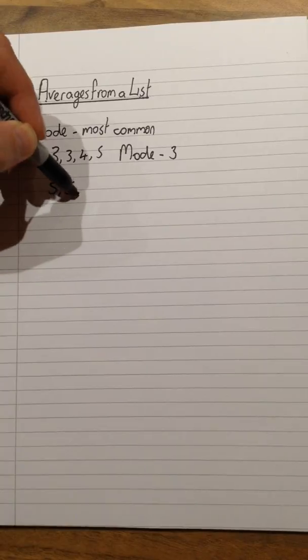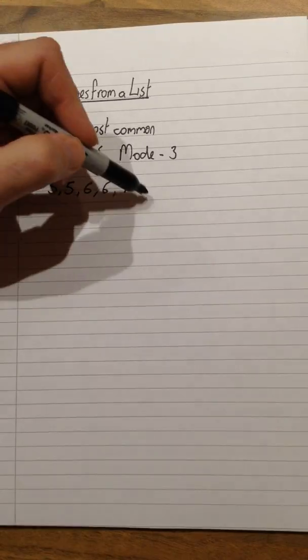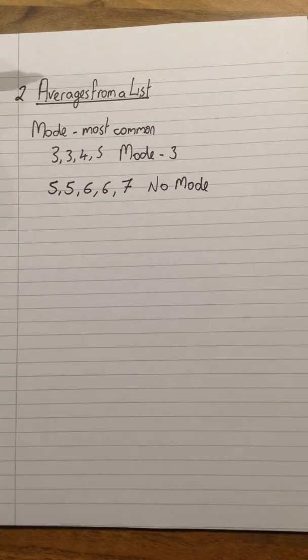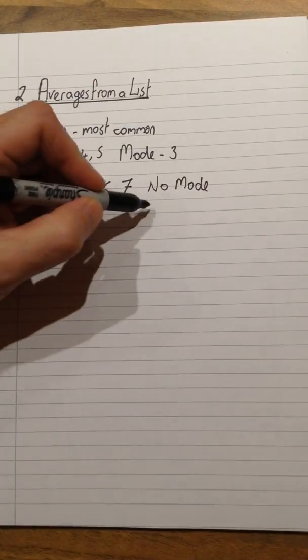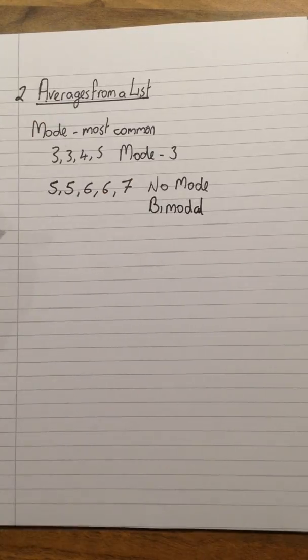If a list of data has more than one number that appears more than any other, so for instance in this list here, five and six both appear the same number of times. There are two possible things that we can say. We can either say no mode because there is no single number that appears more than anything else, or we can use the phrase bimodal. This tends to be something that appears more on the GCSE statistics exam that you'll do in year 10, but we can use it all the way through in maths as well.